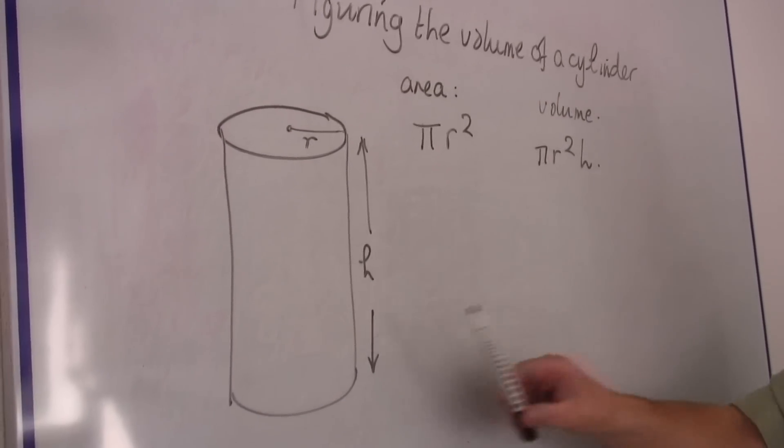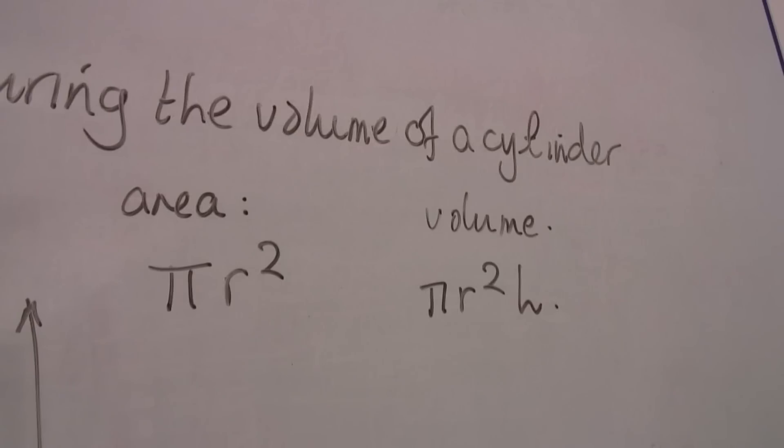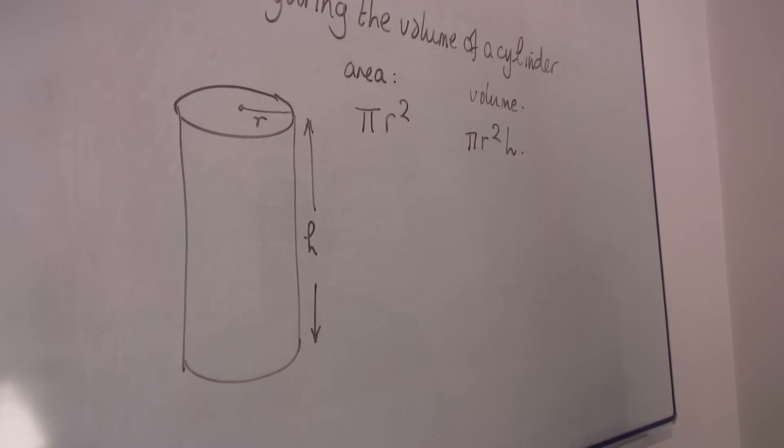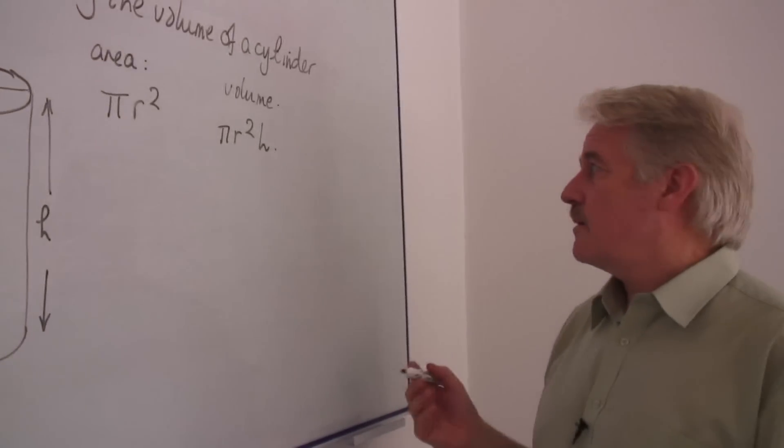Now the height is h so the volume is simply pi r squared multiplied by h, the height. Now to actually do a calculation, give you a sample calculation.